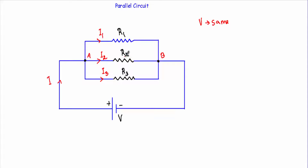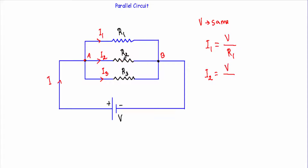As different currents are flowing through each of the resistances, I can calculate the current through each resistor using Ohm's Law. The voltage difference across the terminals is equal to V. Therefore the current through branch 1 will be I1 = V divided by R1. The current I2 flowing through R2 will be I2 = V divided by R2.